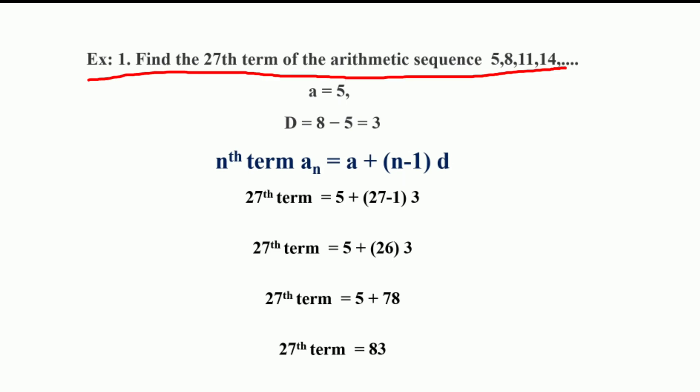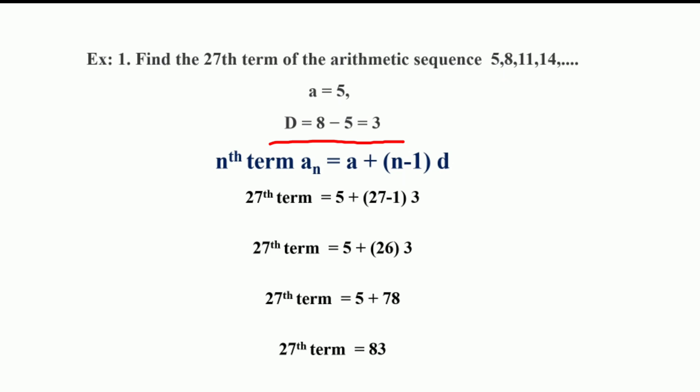Now we have a question: find the 27th term of the arithmetic sequence 5, 8, 11, 14. Here the first term is 5 and the common difference, which is the difference between two consecutive terms, is 8 minus 5, or 11 minus 8, or 14 minus 11. So the common difference is 3. We have A = 5 and D = 3.